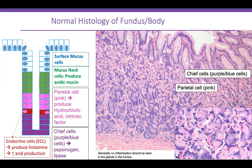There are also endocrine cells — the red cells in the fundic mucosa — which produce histamine, which in turn increases acid production. Chief cells are the purple or bluish-purple cells; they produce pepsinogen and lipase. Pepsinogen is transformed to pepsin by hydrochloric acid in the stomach and helps with protein digestion, while lipase aids digestion of lipids. In normal fundic mucosa there is minimal inflammation in the lamina propria.